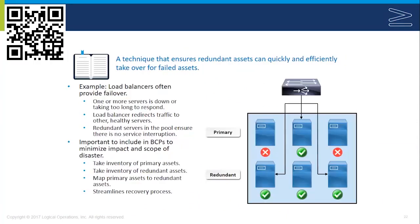Failover is a technique that helps ensure redundant assets can quickly and efficiently take over for failed assets, using load balancing and failover clustering to implement redundancy. Load balancers provide not only performance benefits but also failover — if one server is down or too slow, the load balancer redirects traffic to healthy servers. Load balancing is typically for front-end applications like web servers, while failover clustering applies the same concept to back-end servers.